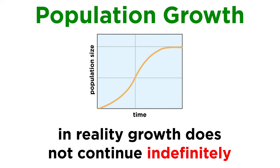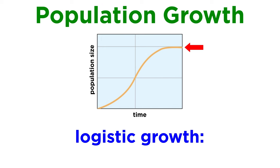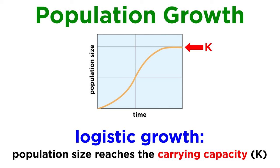Of course, neither geometric nor exponential growth can continue indefinitely. In nature, population growth must eventually slow, and population size eventually ceases to increase. As resources are depleted, the population growth rate slows and eventually stops. This is known as logistic growth. The population size at which growth stops is generally called the carrying capacity, which is the number of individuals of a particular population that the environment can carry or support. Carrying capacity is characterized by equal birth and death rates, creating a population growth of zero.